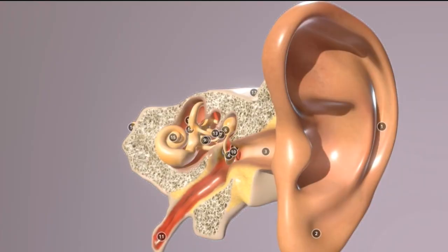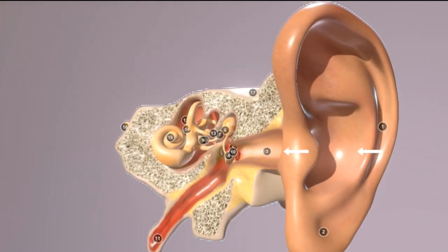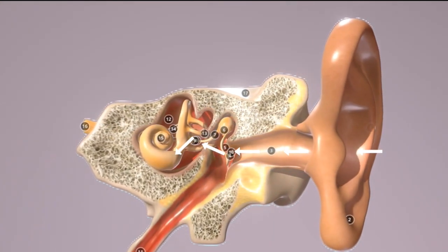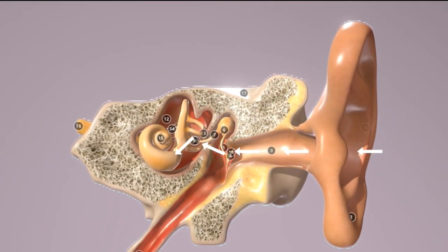The first visualization shows the external and middle auditory pathway. This structure is not responsible for hearing, but for changing external acoustic energy into electrical potential. The acoustic wave reaches the ear canal to the eardrum.